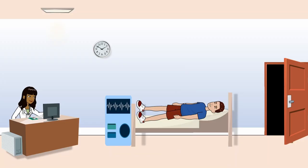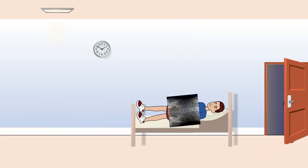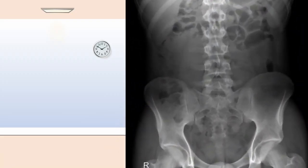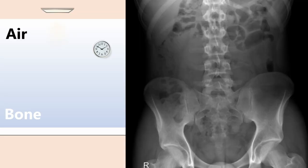To produce an abdominal x-ray, a radiographer aims an x-ray source at the patient. X-rays pass through the body, with denser parts absorbing more x-rays. This difference is picked up by a detector behind the patient and converted into an image using computer programming. Dense tissue like bone absorbs a lot of x-rays and appears white, while air allows x-rays to pass through easily and appears black.